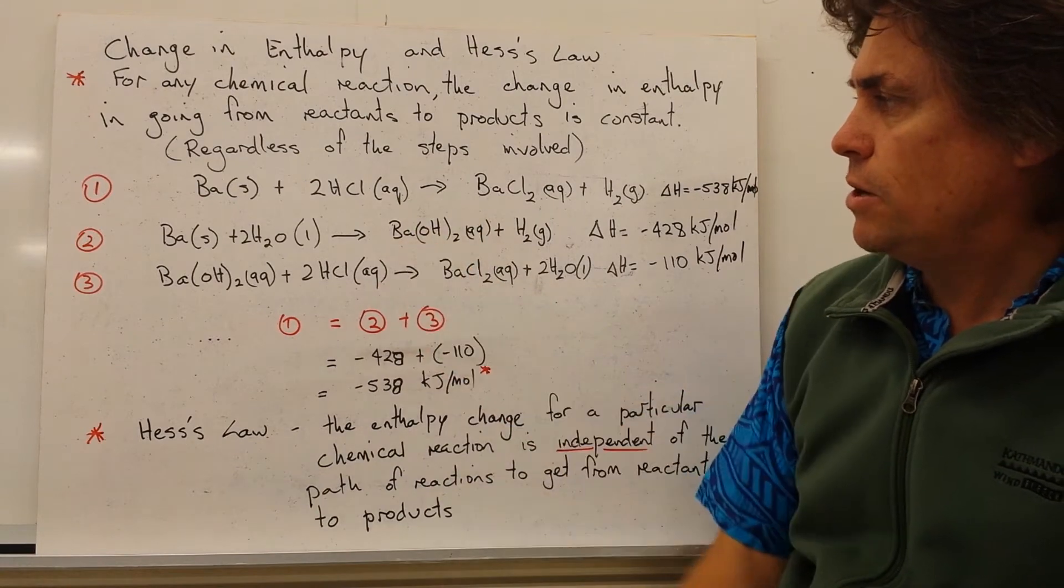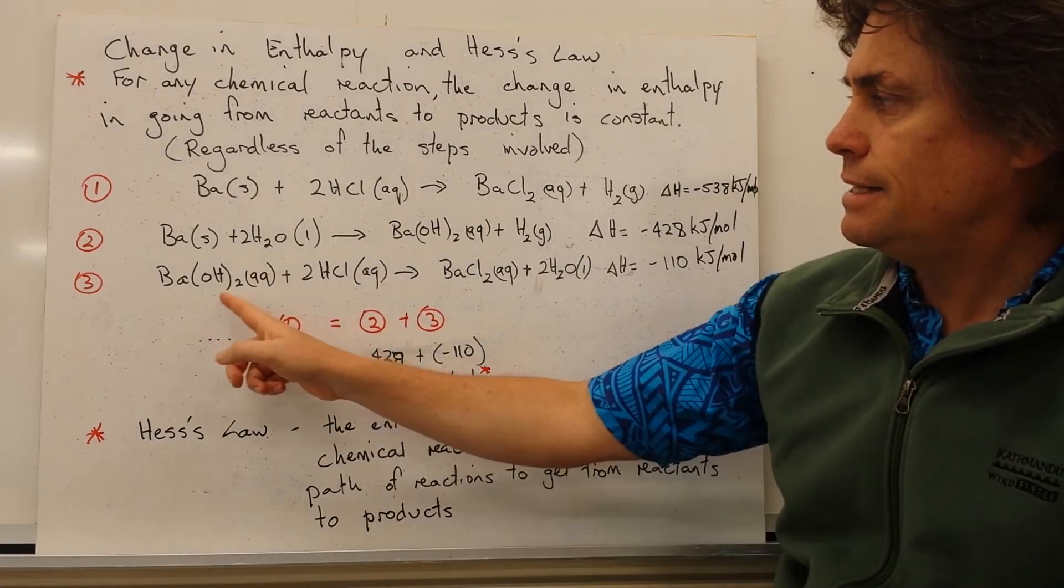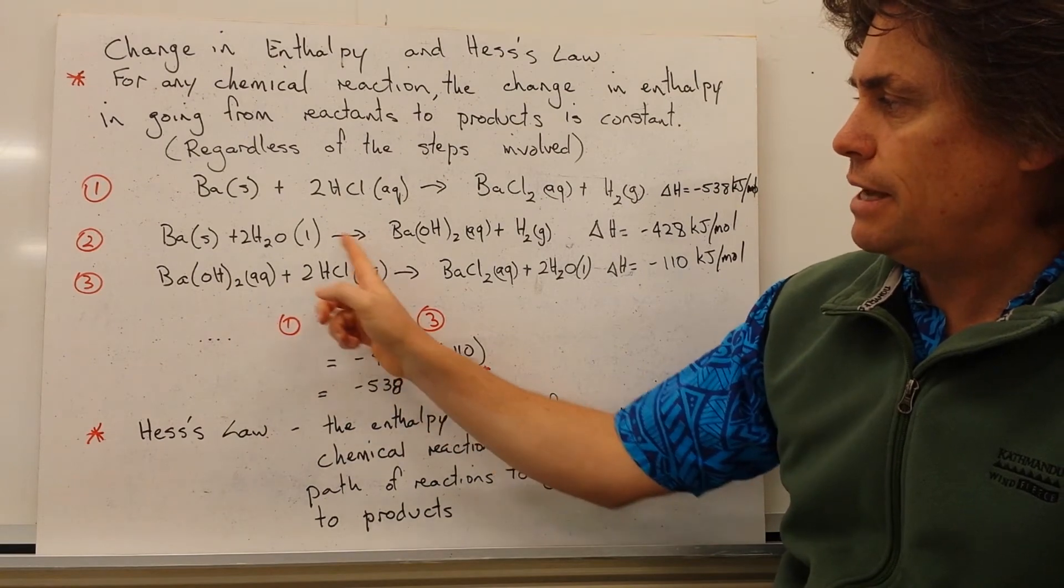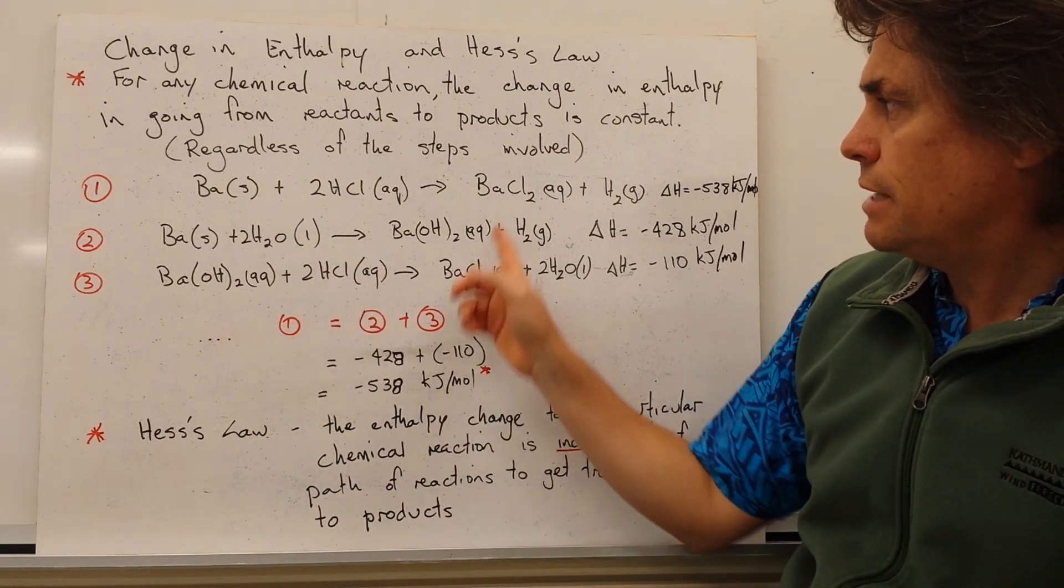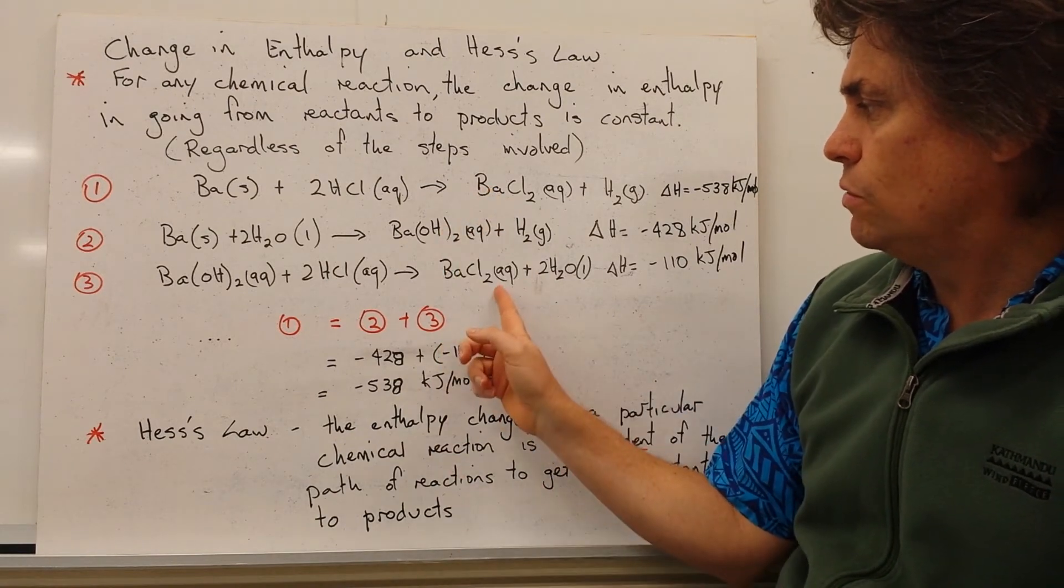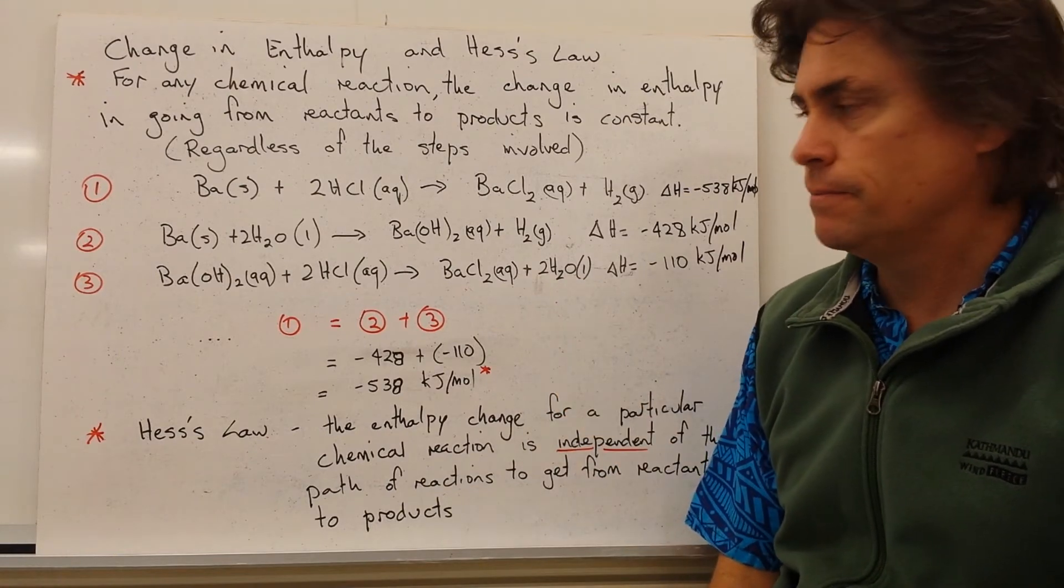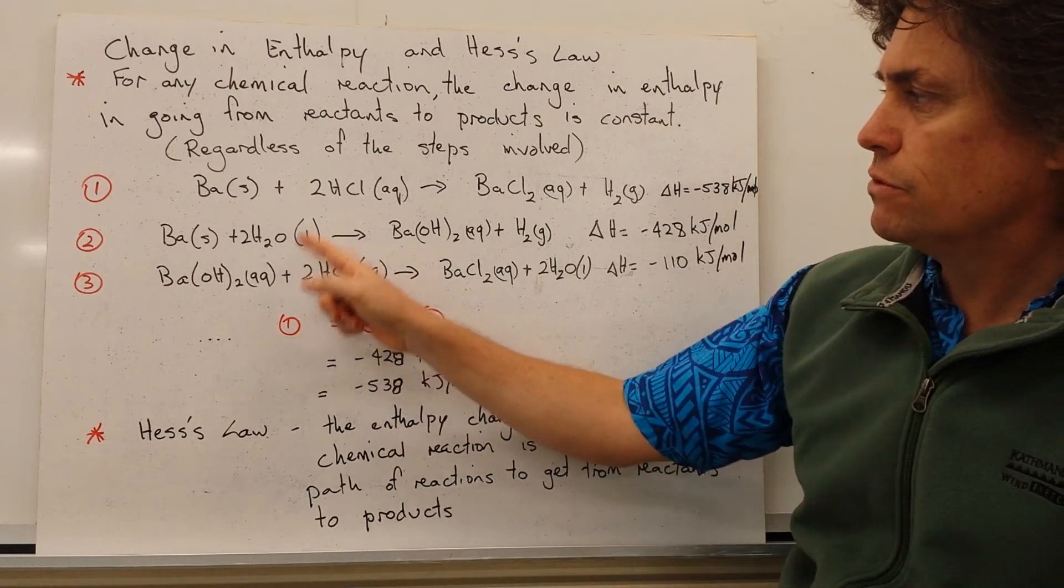Now we can take this barium hydroxide, one of the products from the first reaction, and add it to our HCl, our hydrochloric acid. And we form our second product of our first reaction, the barium chloride. And we've got water in a liquid form here as well.